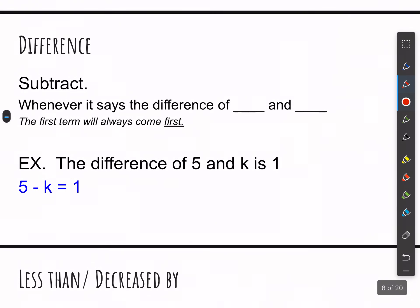Then the difference. This is order important as well. Whenever you subtract something or you use the word difference, it is a subtraction that we are doing. We also have the words less than. So it says whenever it says the difference of something and something else, the first term will always come first. So the difference of 5 and k is 1. So that's all I'll say about that for now.